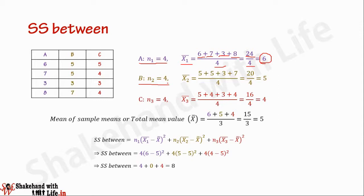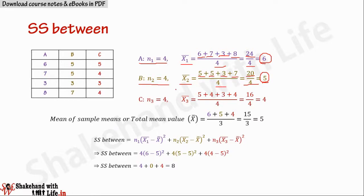For sample B, there are four data points, so the sample size of B is 4. The mean for sample B, which is x2 bar, equals 5 plus 5 plus 3 plus 7, which is 20 divided by 4. When we divide by 4, we get 5, so x2 bar equals 5.